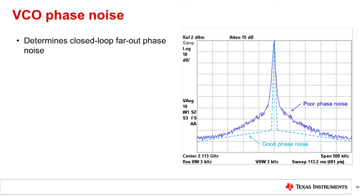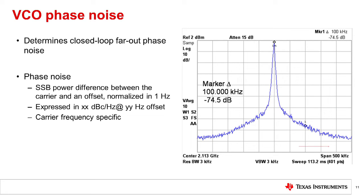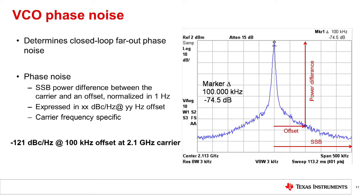VCO phase noise plays an important role in a PLL system — it affects the closed-loop far-out phase noise. If the VCO is being used as a local oscillator of a radio receiver, the far-out phase noise will affect receiver performance such as adjacent channel selectivity, reciprocal mixing, blocking performance, etc. The Q factor of an oscillator determines its phase noise; higher Q means better phase noise. We define phase noise as the single-sideband power difference between the carrier and an offset, normalized in a one-hertz bandwidth. Phase noise is expressed in dBc/Hz at a given offset frequency. It's important to specify the VCO frequency when discussing phase noise — for example, minus 121 dBc/Hz at 100 kHz offset at a 2.1 GHz carrier.